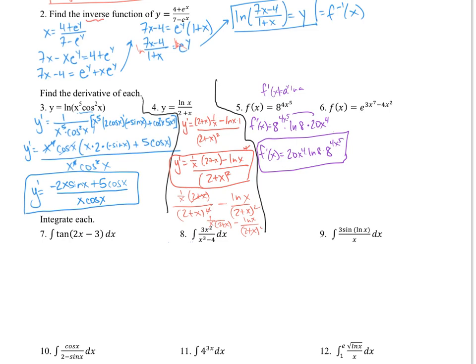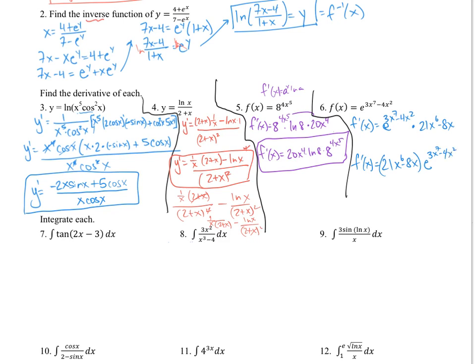Taking the derivative of e to the (3x to the seventh minus 4x squared): the derivative of e to the x is e to the x, then multiply by the chain rule derivative of the exponent. So f prime of x equals e to the (3x⁷ minus 4x²) times (21x to the sixth minus 8x). We rewrite it as (21x⁶ minus 8x) times e to the (3x⁷ minus 4x²).